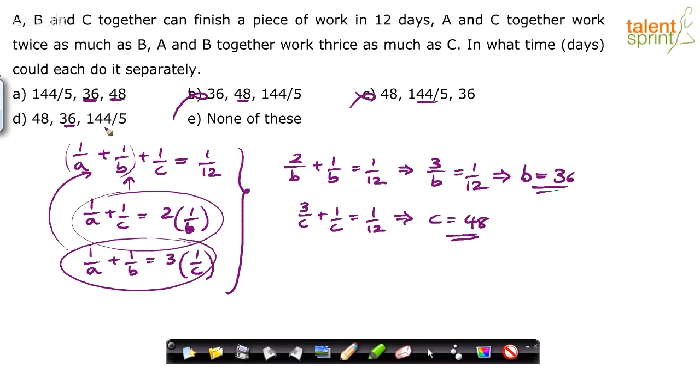C is 48. So here C is 48. Here 144/5, so D is eliminated. Answer should either be A or it should be option E, none of these.